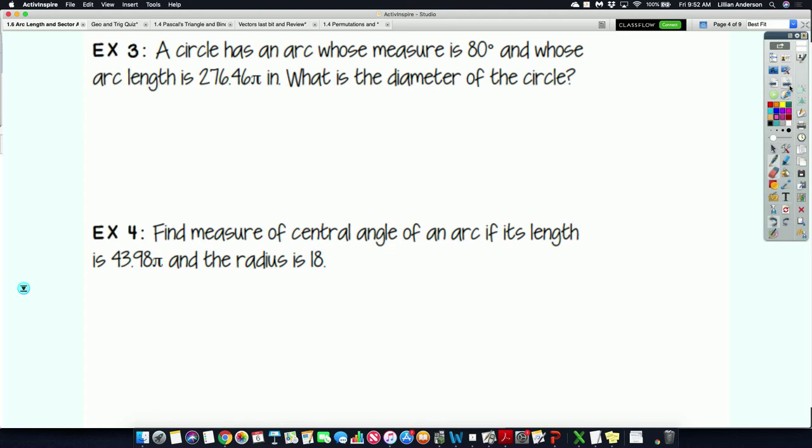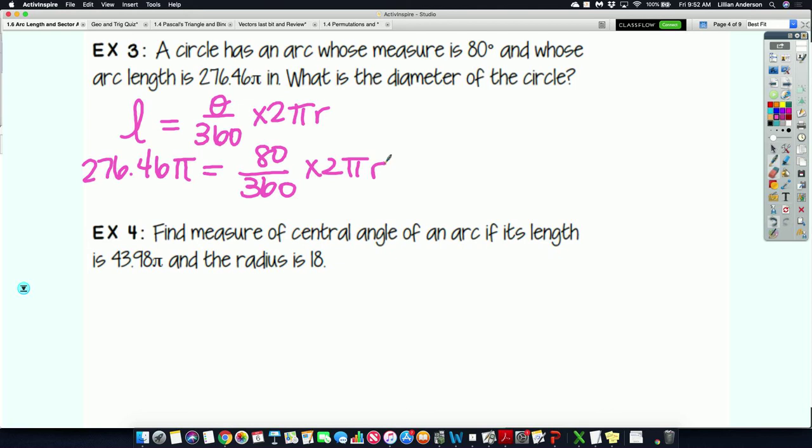A circle has an arc whose measure is 80 degrees and whose arc length is 276.46 pi inches. What's the diameter of the circle? You can also use the formula to work backwards. Okay. If you take the formula, which is arc length, theta over 360 times 2 pi r, we have a lot of information already. We know the arc length is 276.46 pi inches. Theta is what? 80. And we are looking for, what would I need to find in order to answer this question? You're looking for your radius, and then you just need to multiply by 2.